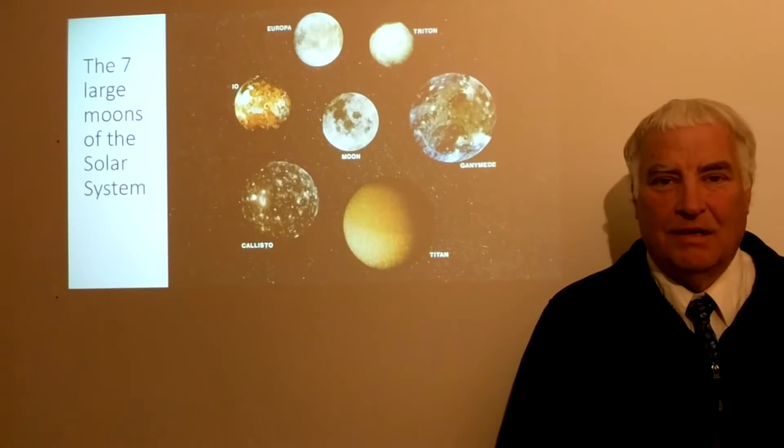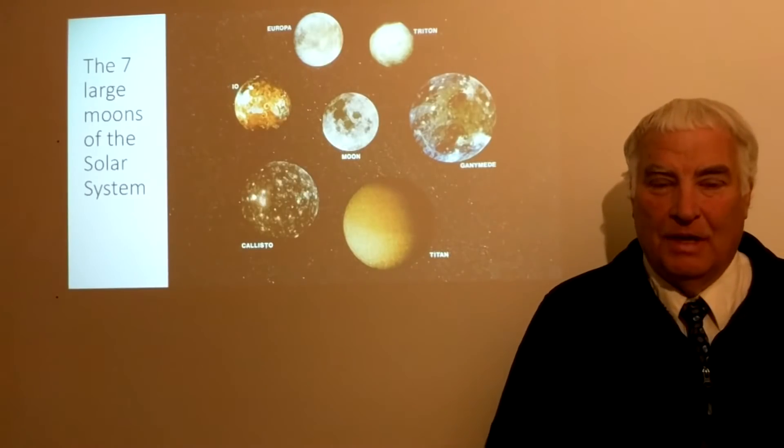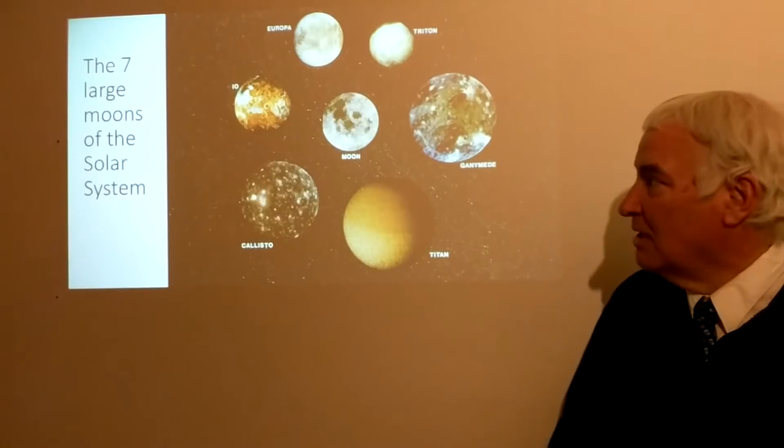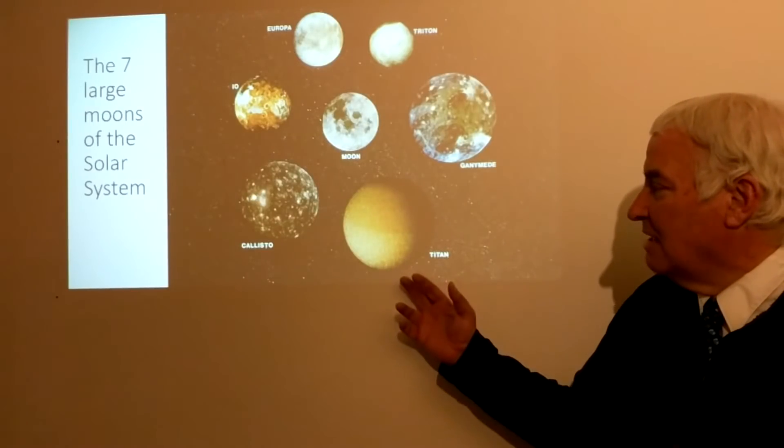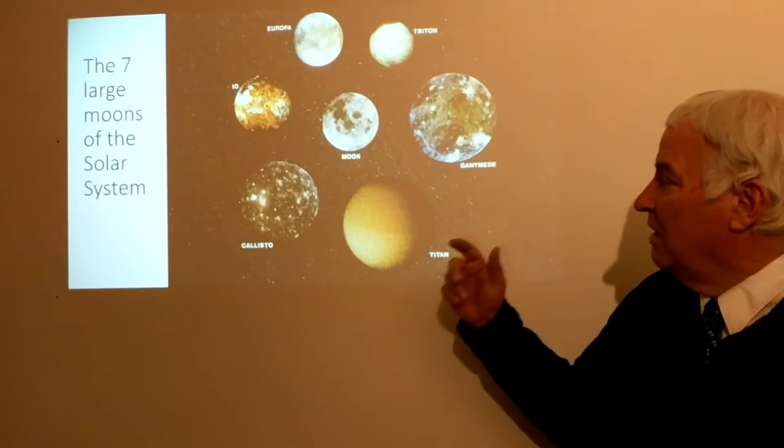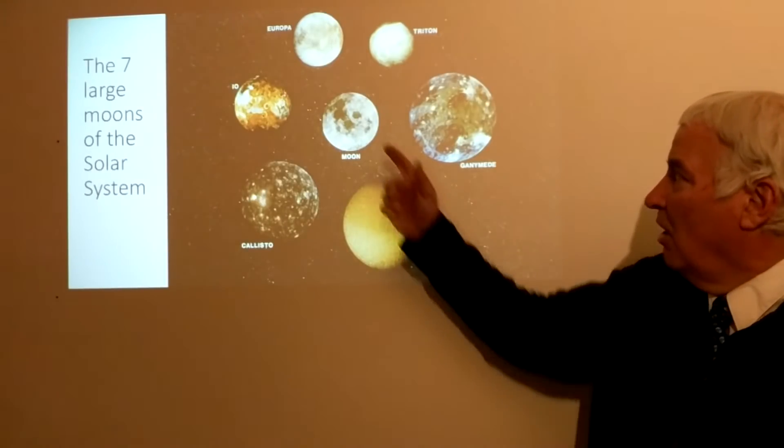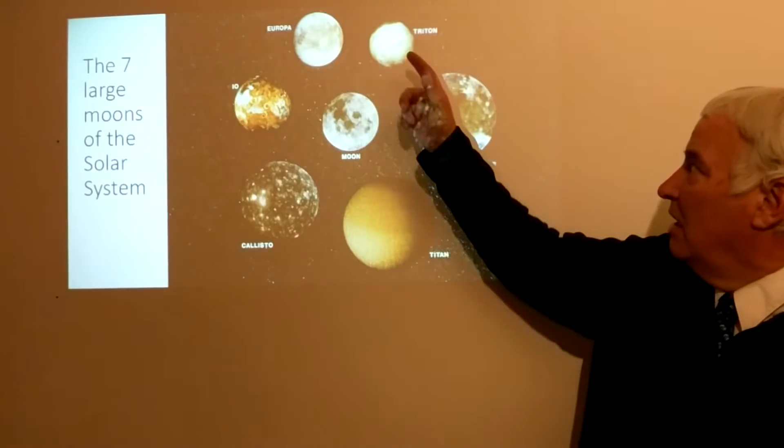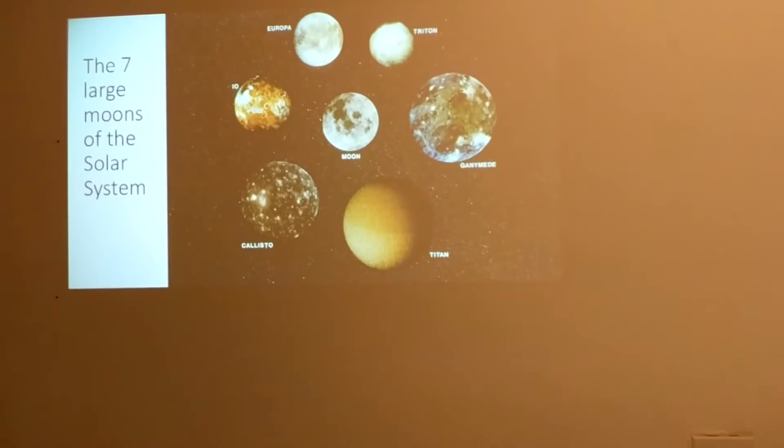This is Triton in a nutshell. Triton is the large moon of Neptune and it is the smallest of the seven large moons of the solar system. We see we have Titan, moon of Saturn, and Ganymede, Callisto, Europa, and Io, moons of Jupiter, our own moon, and Triton here. We know least about Triton because it is so remote.